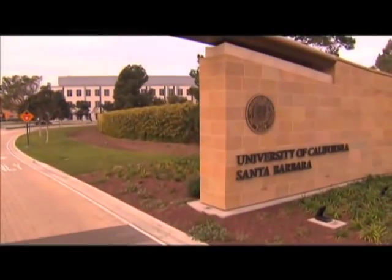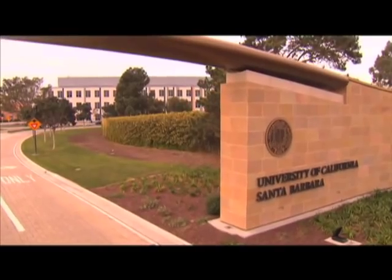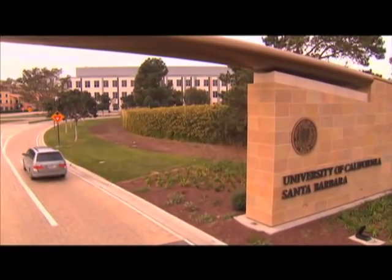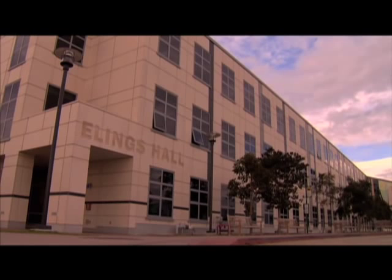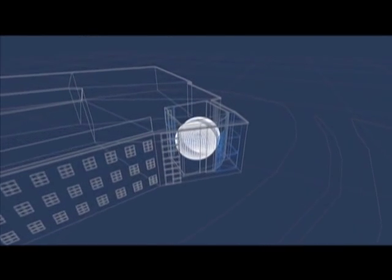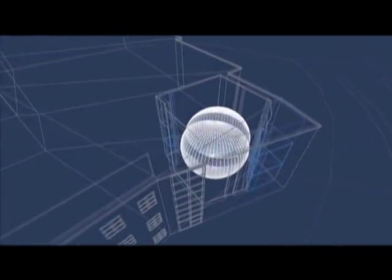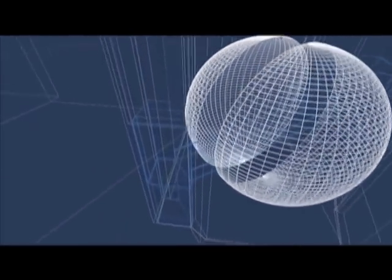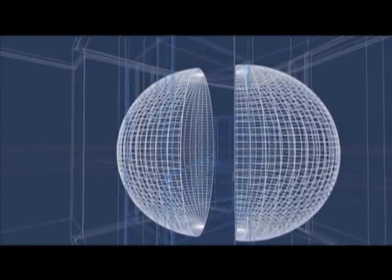You're going onto the campus right now. Behind you, that's the California Nanosystems Institute. Elings Hall. I've got material scientists, physicists in that building, and we also have media artists. You're flying right now into the Allosphere. It's a three-story metal sphere in an echo-free chamber.